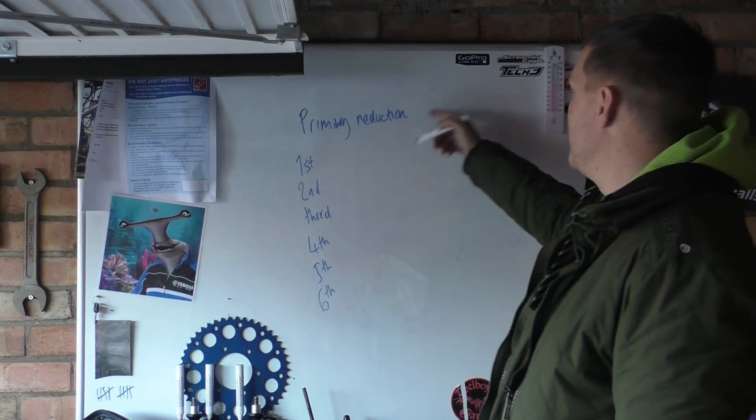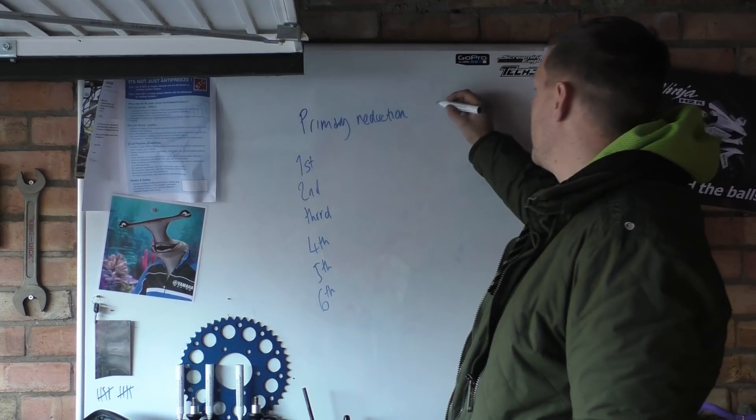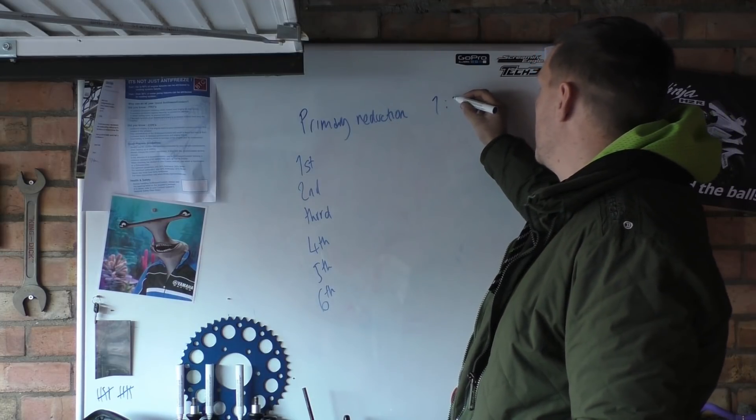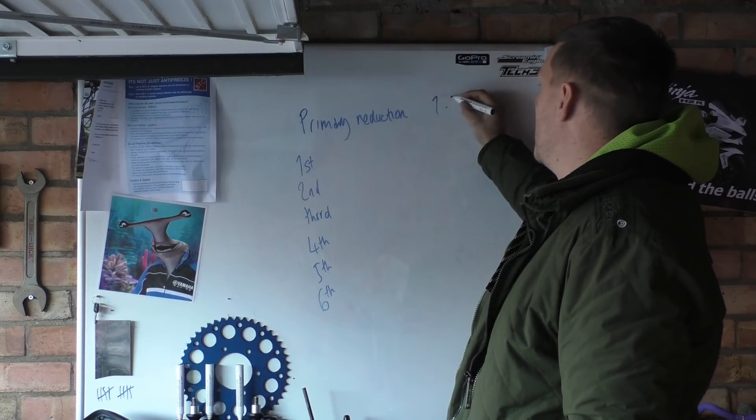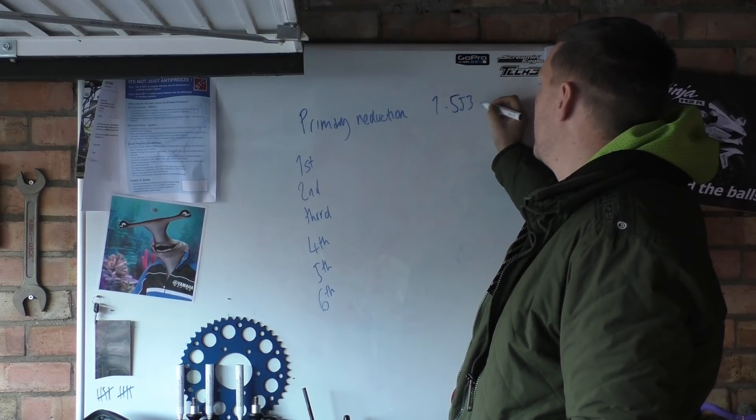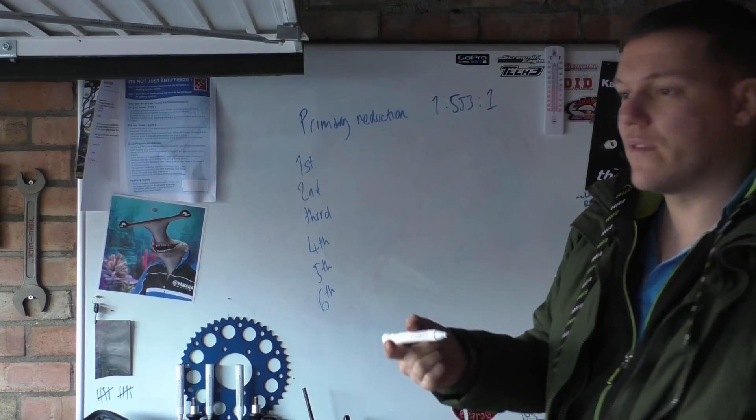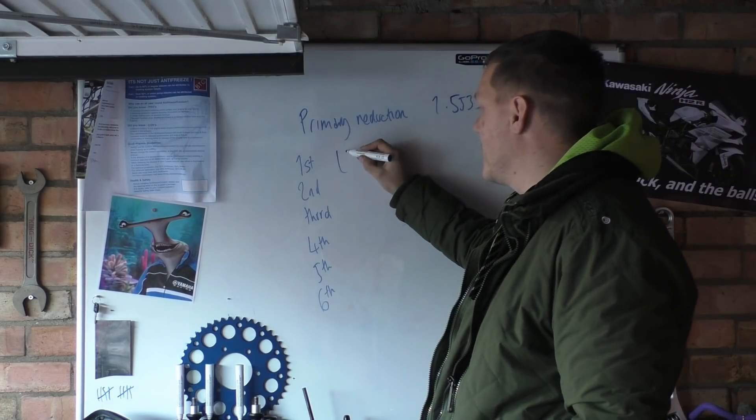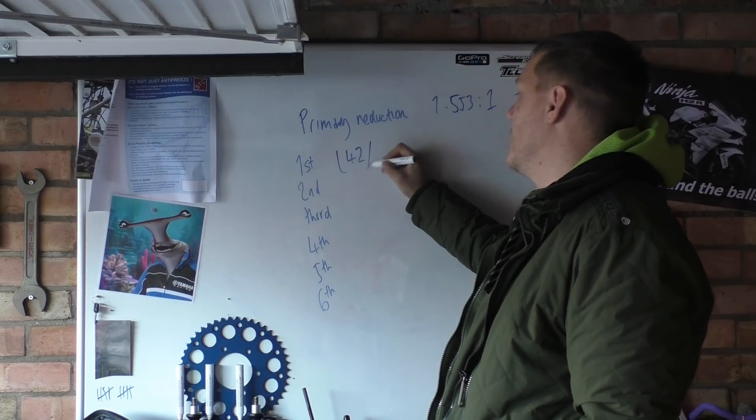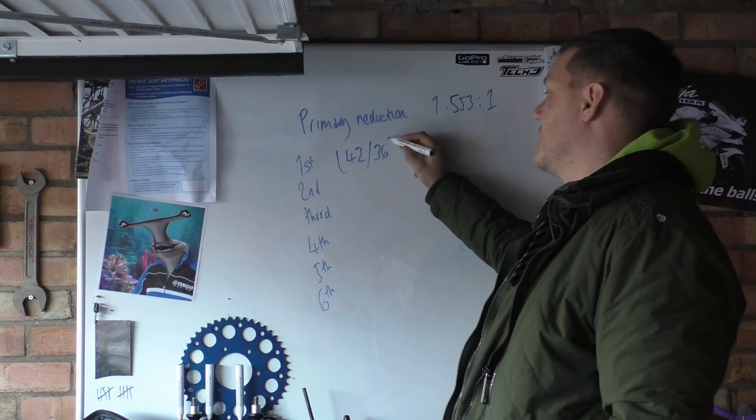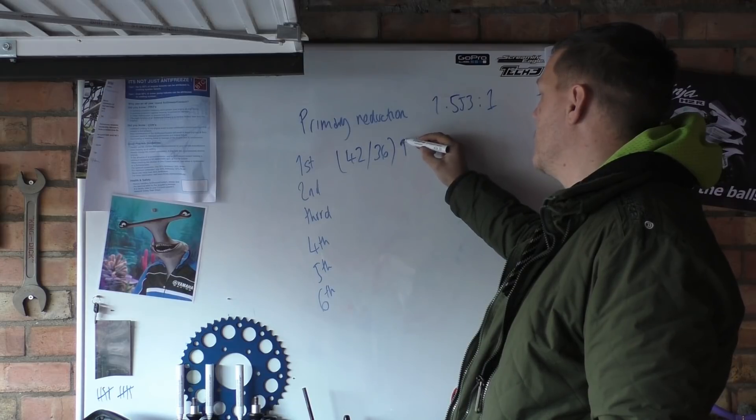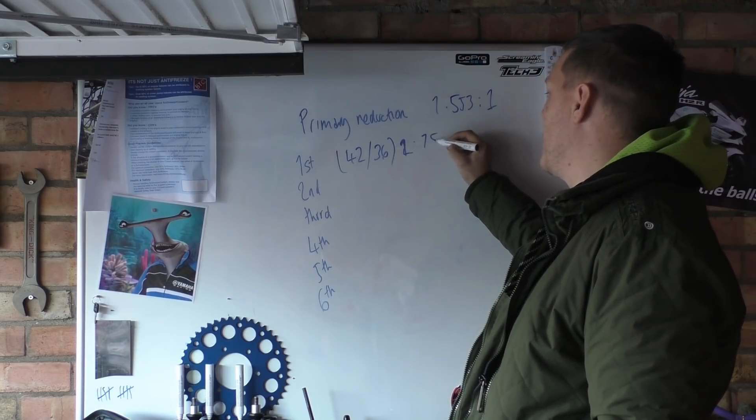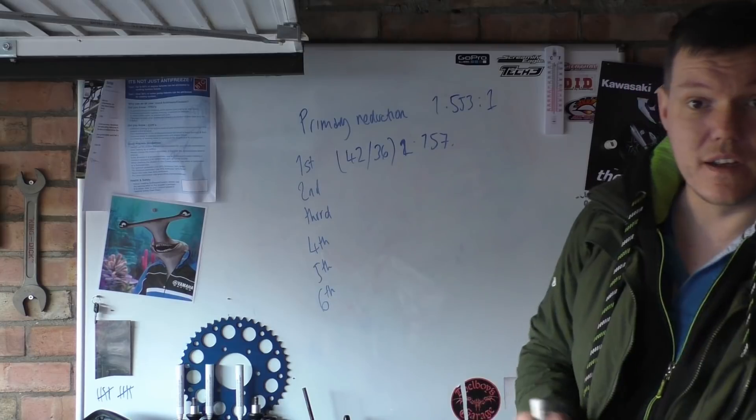So basically you'll have a primary reduction and it'll say, I don't know, one point, ratio, one point five five three to one. And then you'll have all these other numbers. Sometimes in brackets it'll say 42, 36, kind of like that. And then it'll have a number. 2.157, something like that. You got what I mean?